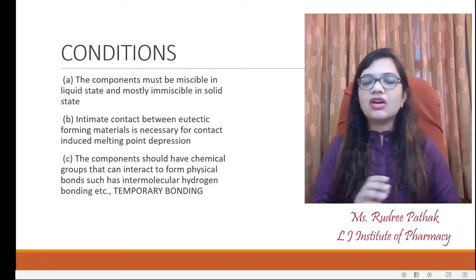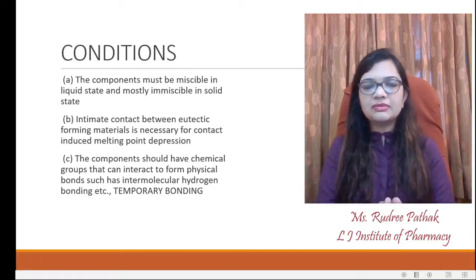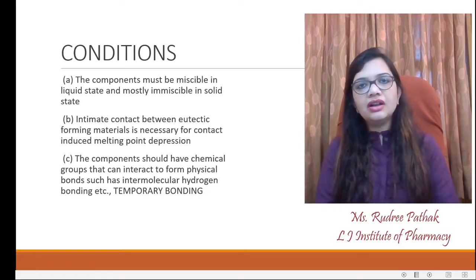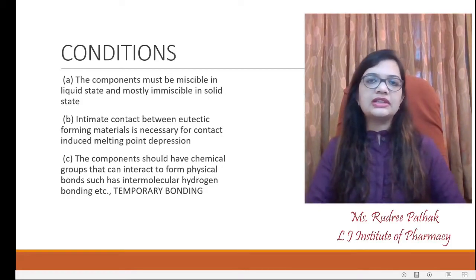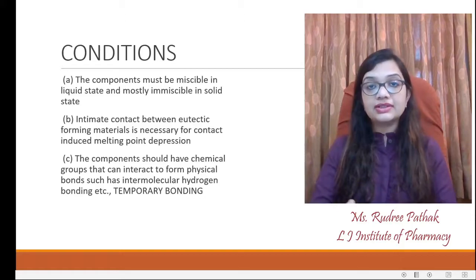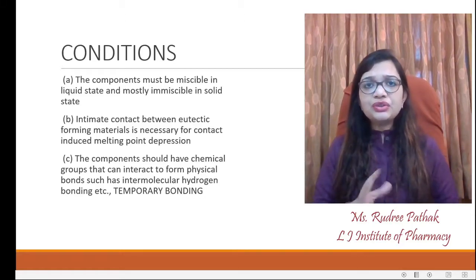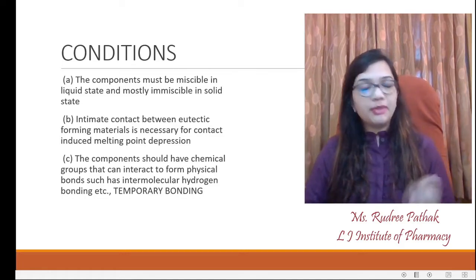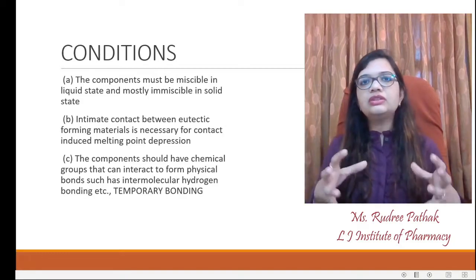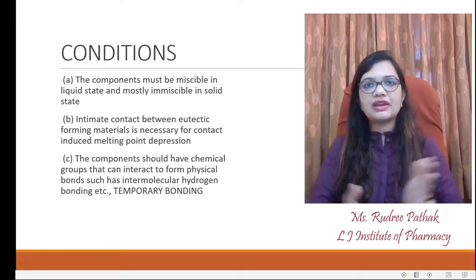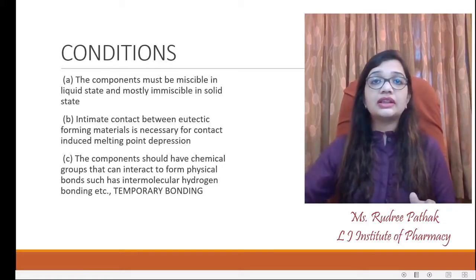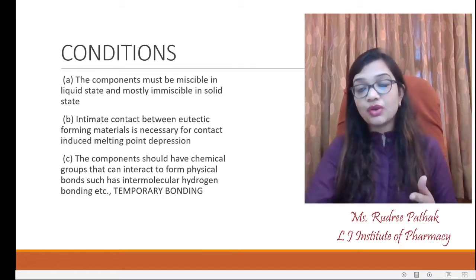They should be in intimate contact — that means in close proximity with each other — so that melting point depression can actually occur and a resulting compound can be formed with a lower melting point than the original ones. Additionally, they should have certain chemical groups which induce temporary bonding. It is not a permanent phenomenon, but compound A and compound B should have certain chemical structures so that they can have a temporary bonding to produce this resulting phenomenon.